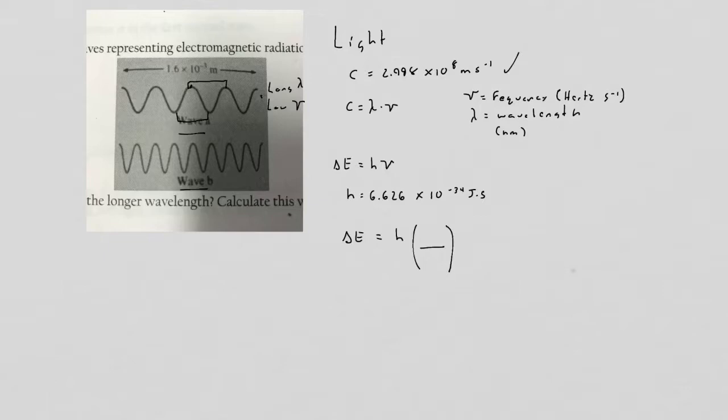Whereas if you look at wave B, wave B has a short wavelength. And that means more waves are going to pass per second. So it's going to have a higher frequency of waves passing per second. We'll do math with this later, but right now I just want to talk about the relationships.